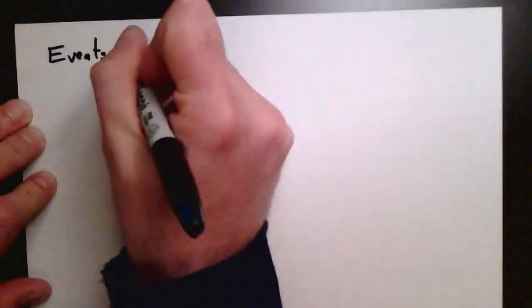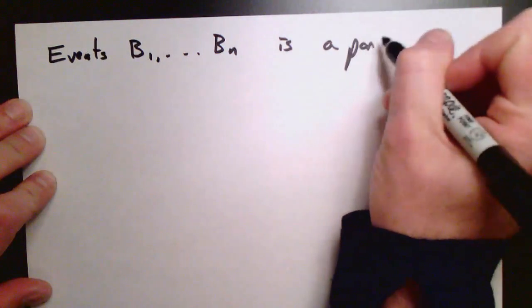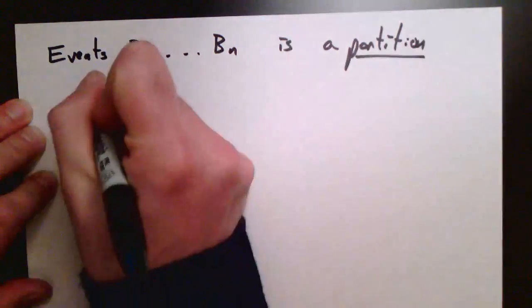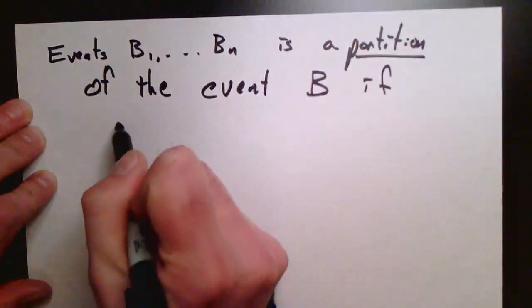A concept that will be extremely useful to us is the idea of a partition of events. So a collection of events, 1 to m, is a partition of another event, b, if two things hold.